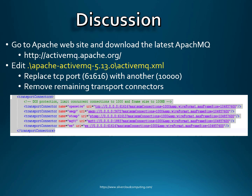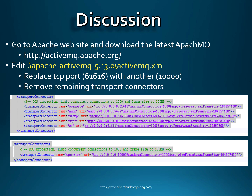Out of the box, this is what the transport connectors section looks like in the ActiveMQ.xml file. There are five different connectors. The one we want to focus on is the first one that says open wire, and you can see the port number there is 61616. I'm going to delete all the other transport connectors and just keep the open wire one starting with TCP, and use port 10,000.